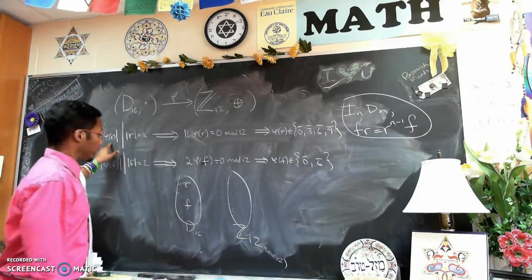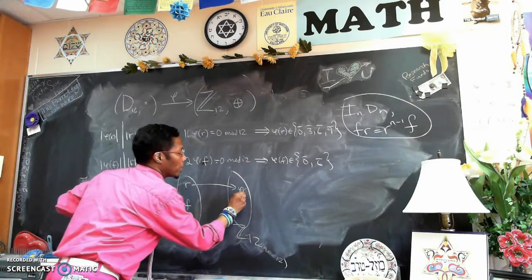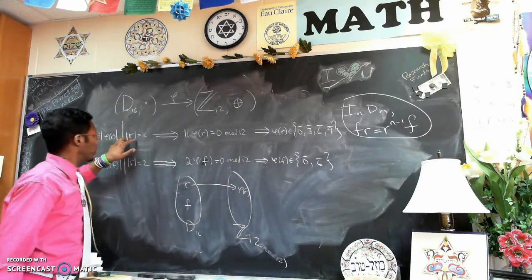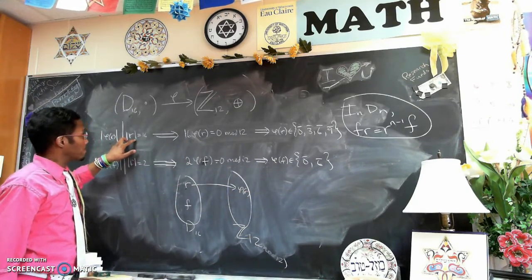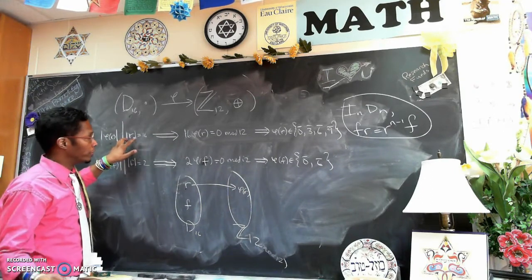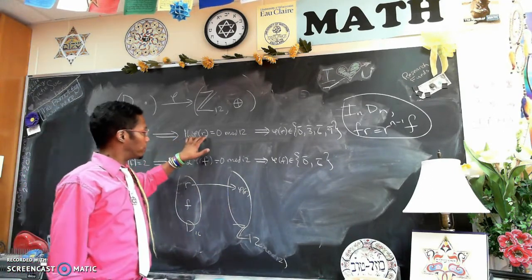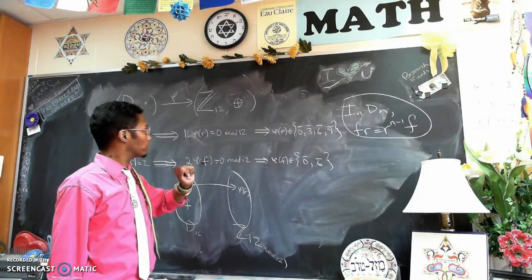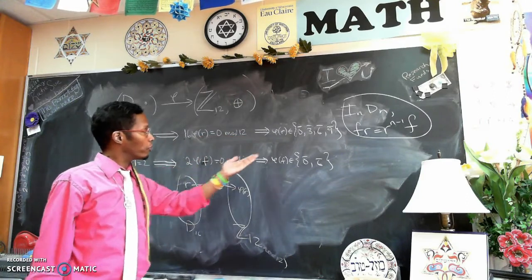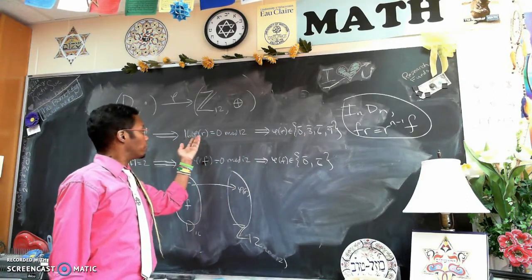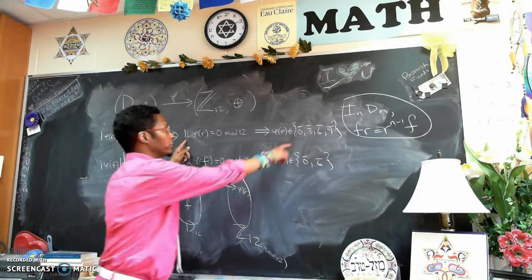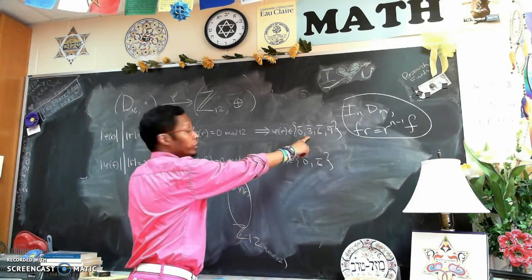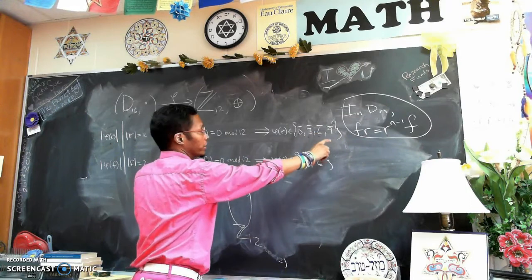Because the image of R must divide the order of R, that forces, as we saw in the previous video, that 16 times φ(R) must equal 0 mod 12. Doing the math, there are four possible choices of φ(R) then: 16 times 0 is 0, 16 times 3 is 0, 16 times 6 is 0, and 16 times 9 is 0.